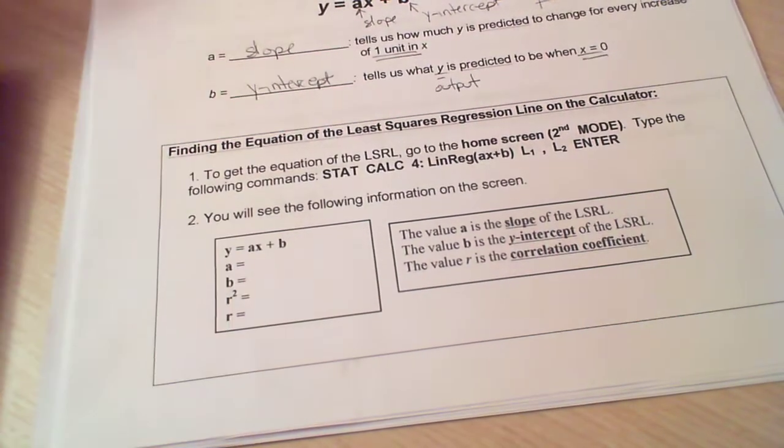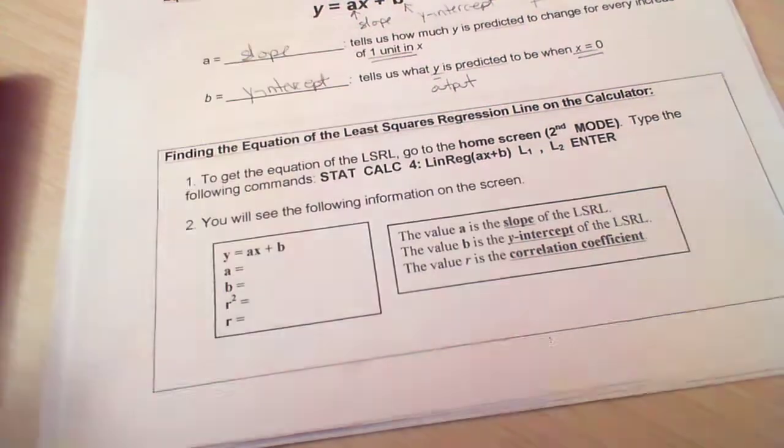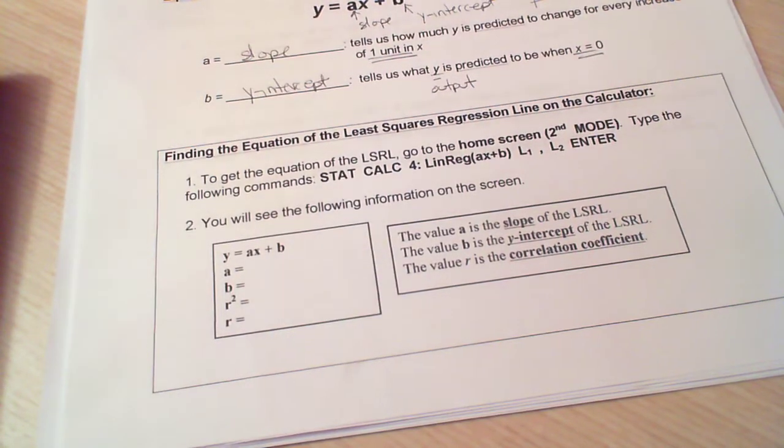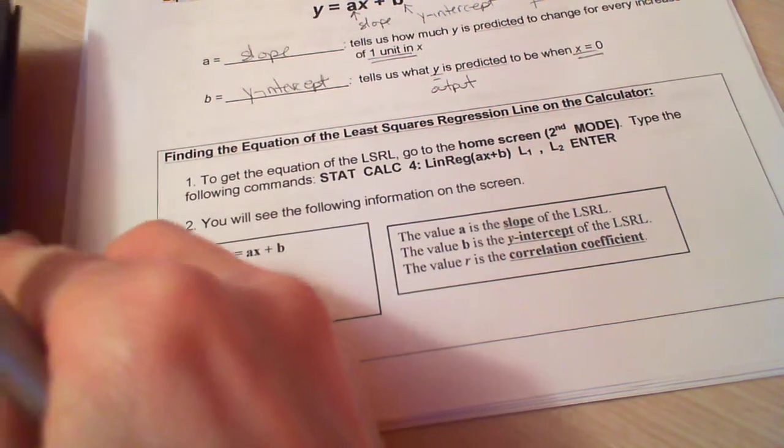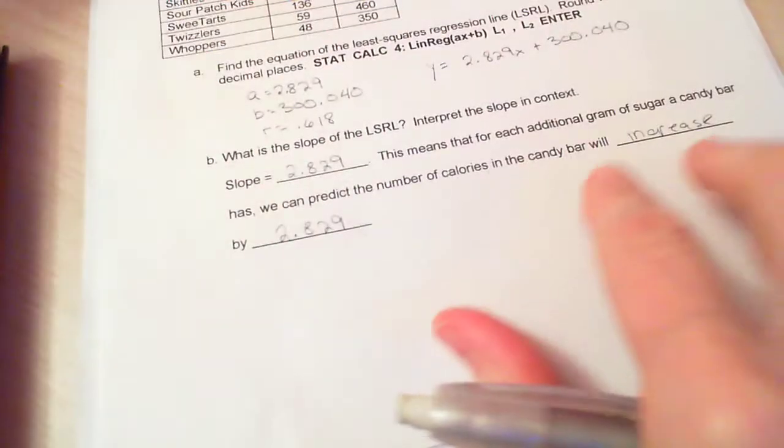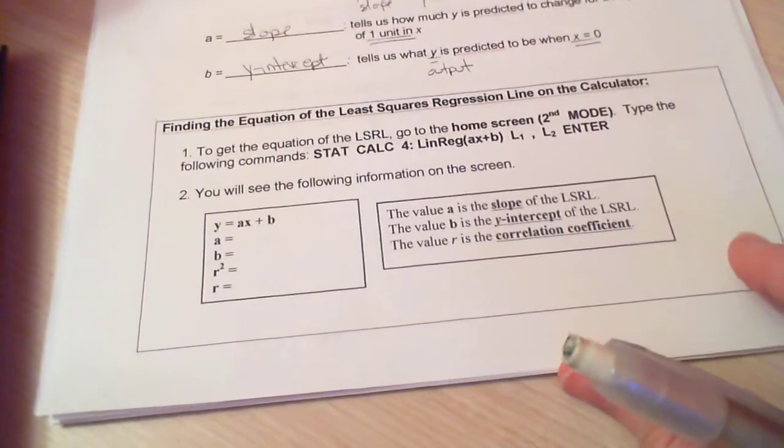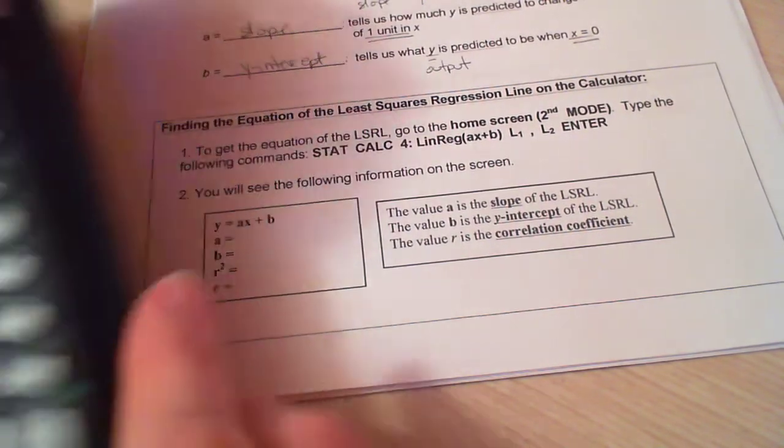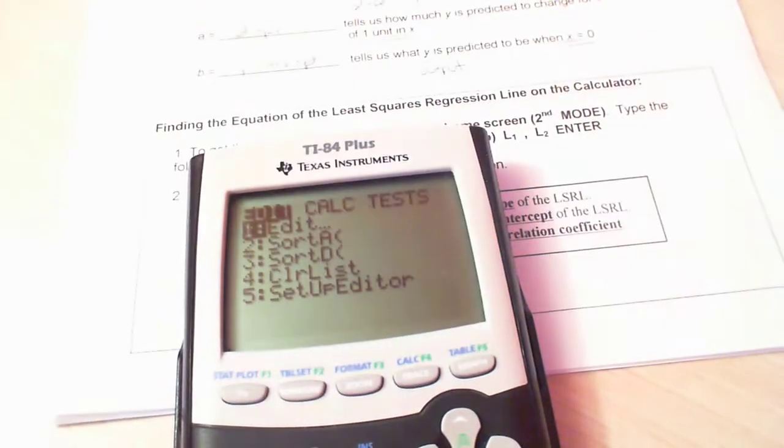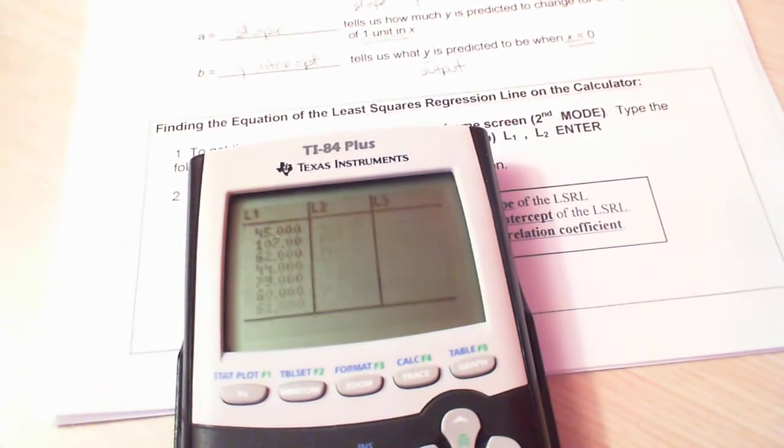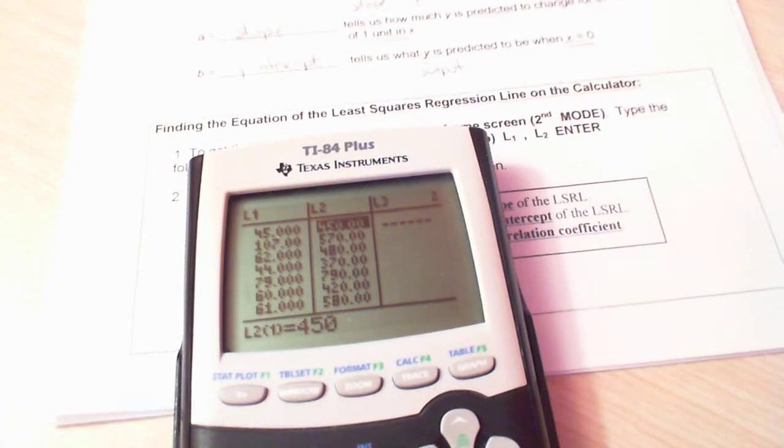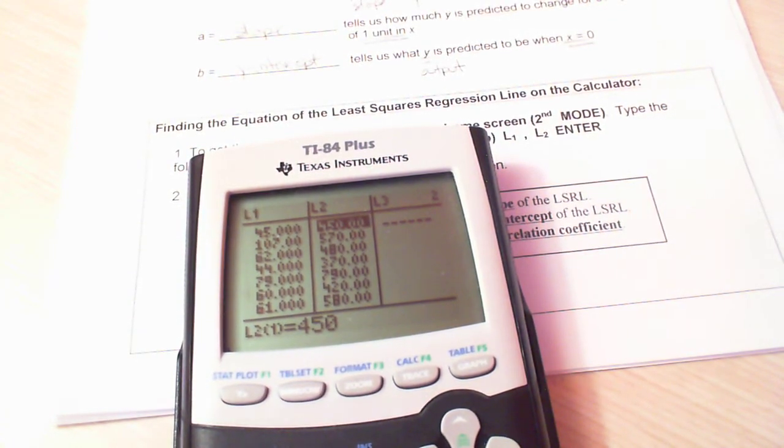So we're going to go through in this video how to find this least squares regression line in the calculator. I have in my calculator right now the data for the candy bar problem, which we've looked at many times. So if you want to follow along on your calculator and check your numbers, you're going to want to go to your stat, edit, and in your L1, L2, you're going to want to put that candy bar data because that's what I have in there right now.